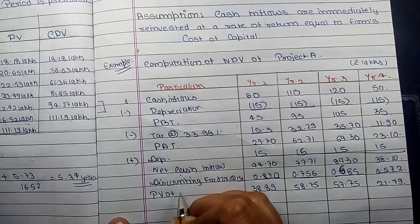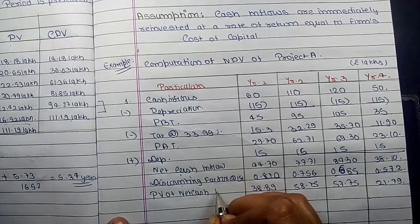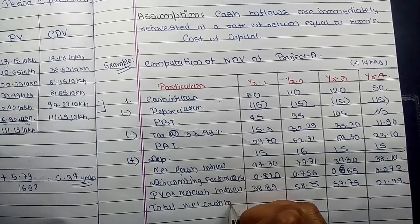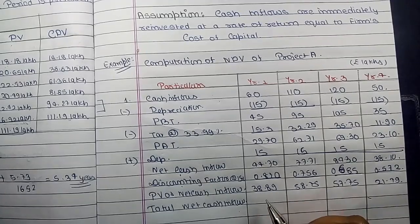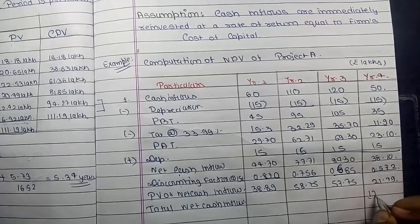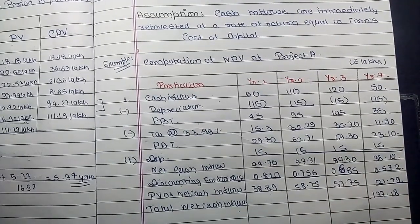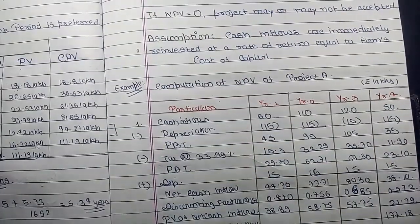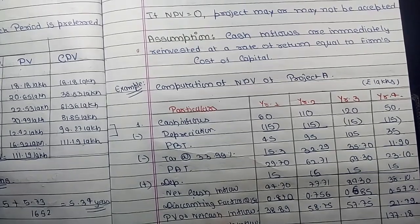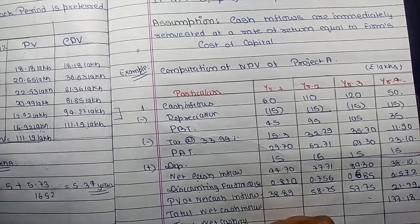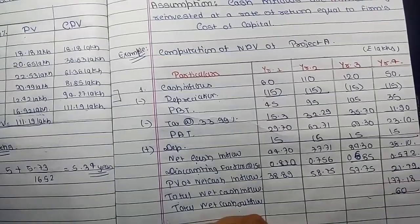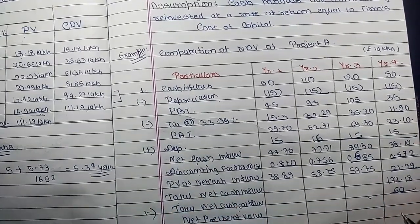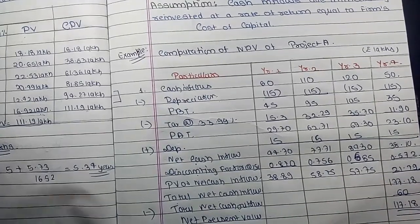These are the present values of net cash inflows for project A. The total is calculated by adding all four years: 38.89 + 58.75 + 57.75 + 21.79 = 177.18 lakhs. Deducting the net cash outflow of 60 lakhs gives the net present value of 117.18 lakhs for project A.